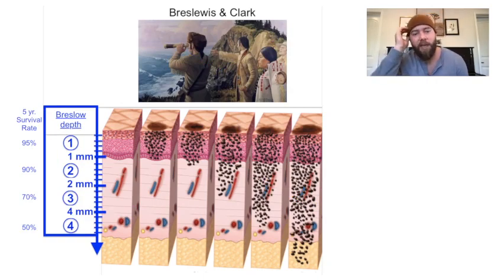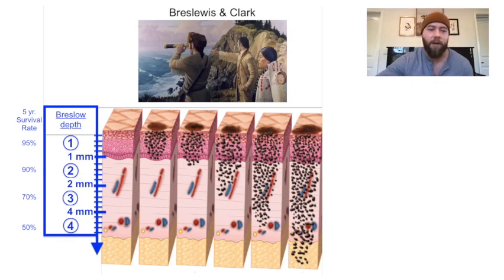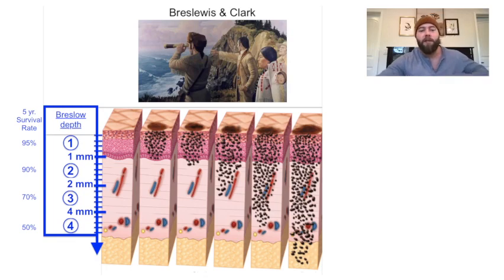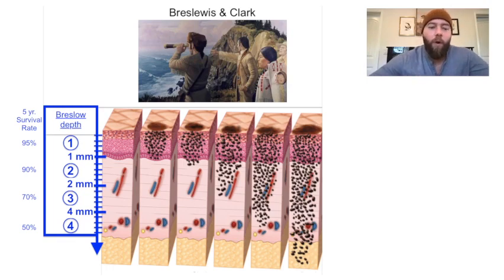The AJCC is a much more complicated staging system. I tried to make a video about it, but it's too much and honestly out of our scope of practice. The simplest way I can summarize it: they still use Breslow depth, because depth is still important to the AJCC classification — that's the T, the tumor size. They use 1 millimeter, 2 millimeters, and 4 millimeters.